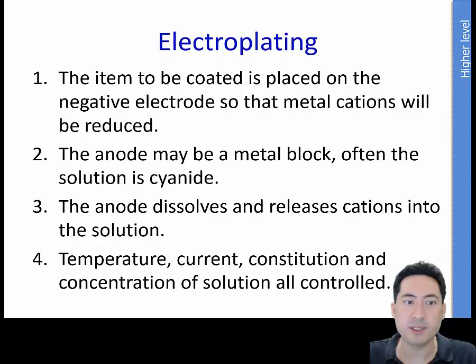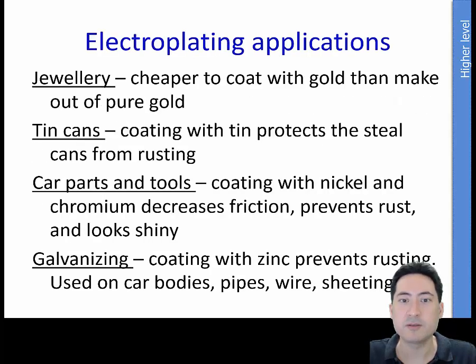And here's just a summary of what I mentioned. Keeping temperature, current, and concentration of solution all controlled. There is also a mention that adding various glues actually helps as well. So what do we use electroplating for? Jewelry, tin cans, stops the steel from rusting, and galvanizing car parts, car tools. Remember some of those. You might be asked some of those.